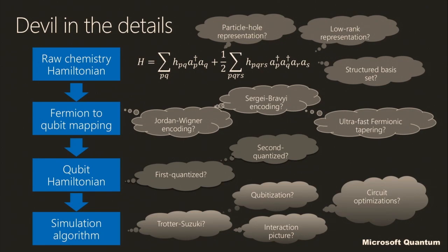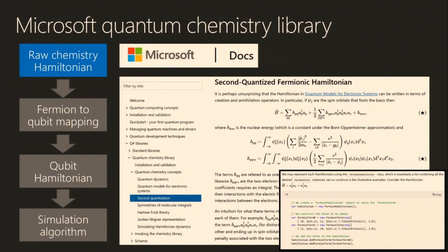That is the method for going from a 3,000-year estimate to run a quantum algorithm down to a one-day estimate — how do we choose the best of these to make an efficient implementation? Since questions came up, I'll note that all this work on the chemistry library within the QDK has at least one major choice for each of the steps in the reduction.